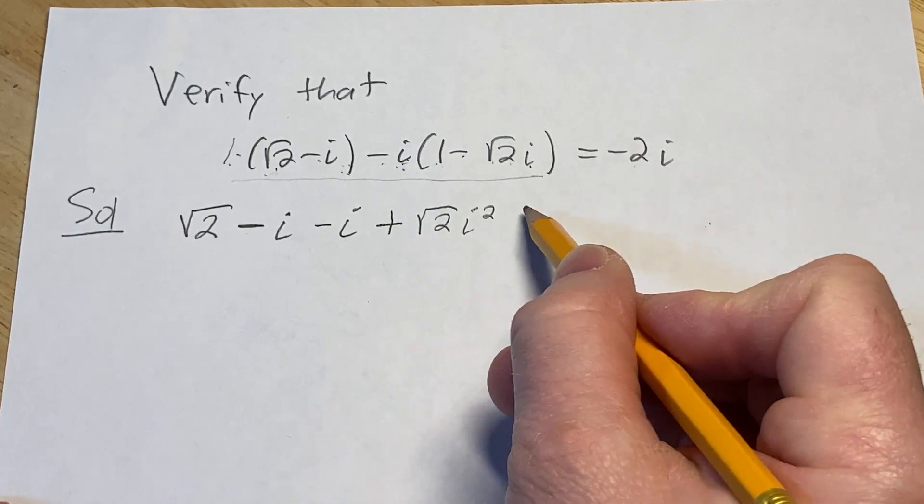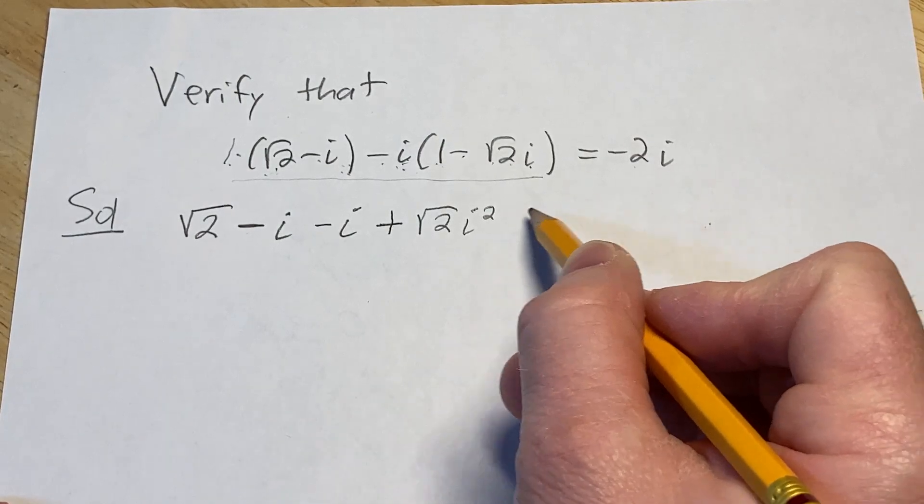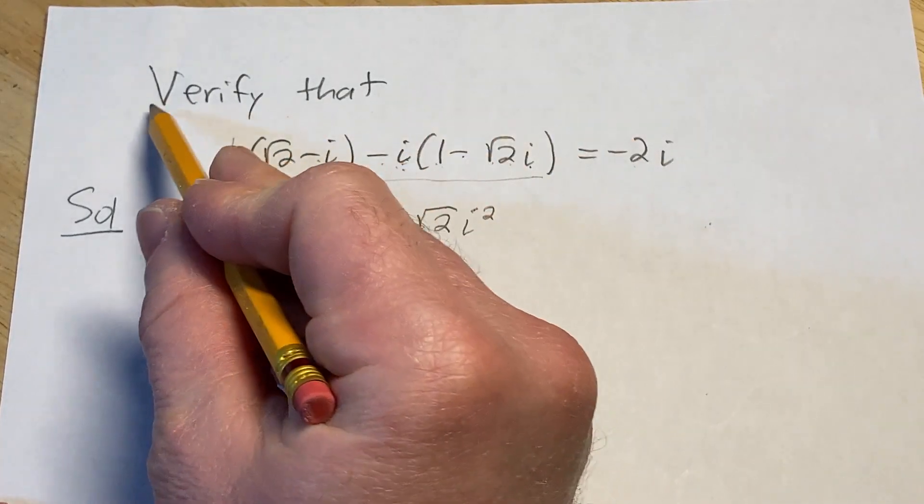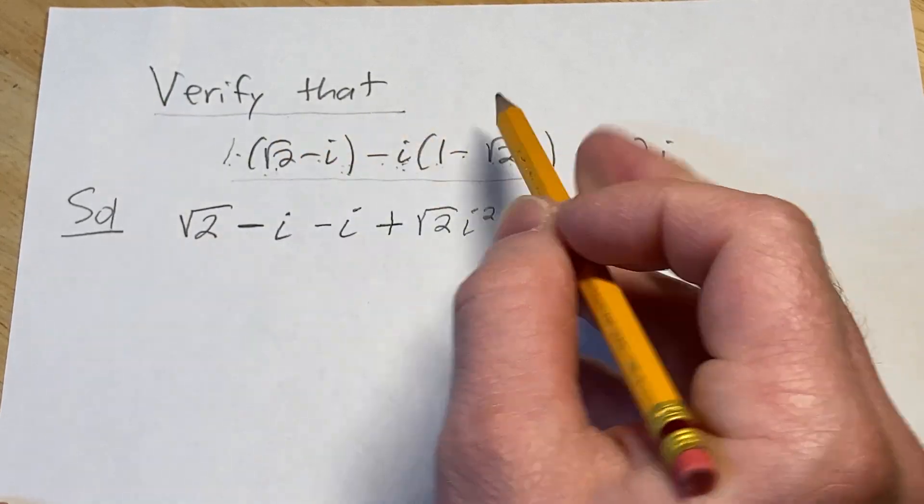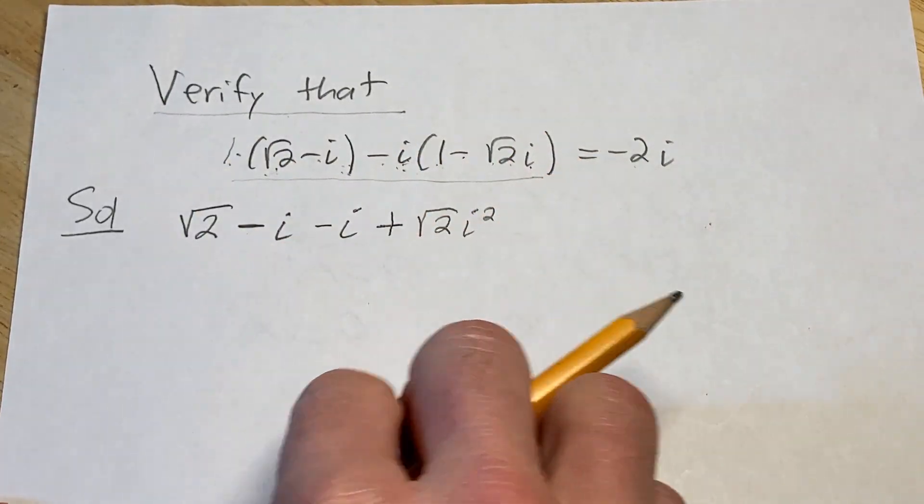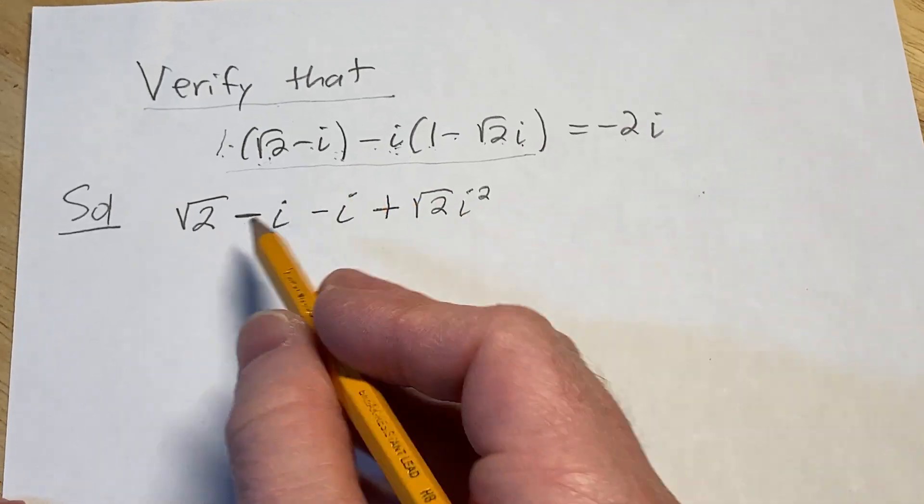And you don't want to say that's equal to negative 2i. That would be basically not doing what we're supposed to do. We're supposed to verify. So you start with one side and then you continue simplifying until you get to the right hand side.